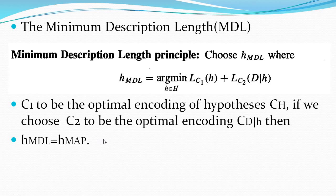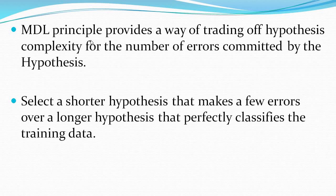When C1 and C2 are used as optimal encodings, H_MDL becomes equivalent to H_MAP, the maximum a posteriori hypothesis. Whatever the maximum posterior hypothesis is will become the minimum description length hypothesis, obtained using LC1(H) and LC2(D|H). C1 is the optimal encoding of the hypothesis; C2 is the optimal encoding for D|H.